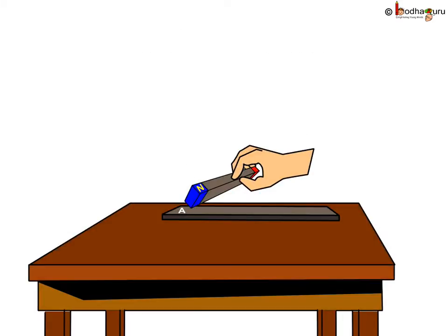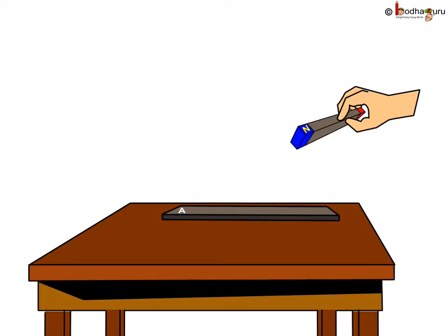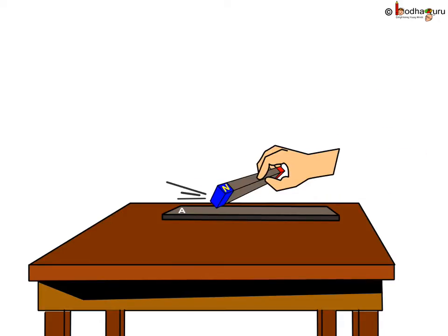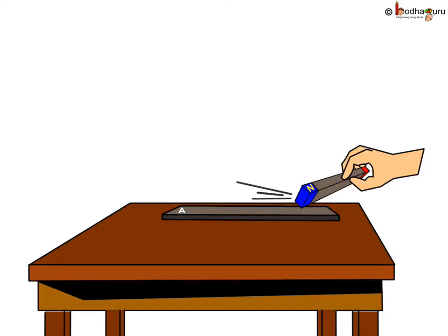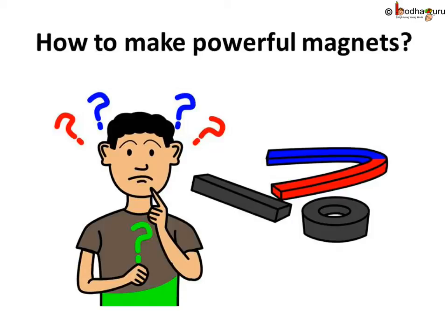We already know, rubbing a magnet on an iron piece converts that iron piece into a magnet. But that is a weak magnet and making magnet this way is also tiring. So, we humans found a new way to make powerful magnets. It is by using electricity. Yes, electricity.